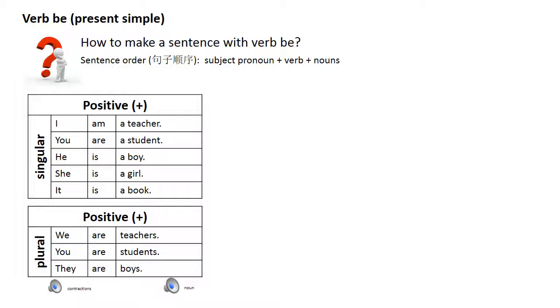It is a book. If the noun begins with a, e, i, o, u, you use n before the noun.